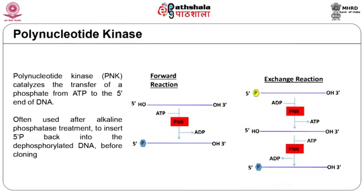Polynucleotide kinase is an enzyme that catalyzes the transfer of a phosphate from ATP to the 5' end of either DNA or RNA. The enzymatic activity of polynucleotide kinase is utilized in two types of reactions. In the forward reaction, polynucleotide kinase transfers the gamma phosphate from ATP to the 5' end of a polynucleotide (DNA or RNA). The target nucleotide is lacking a 5' phosphate either because it has been dephosphorylated or has been synthesized chemically.